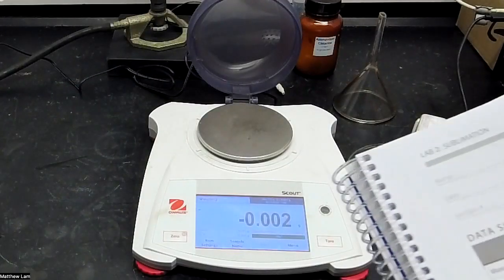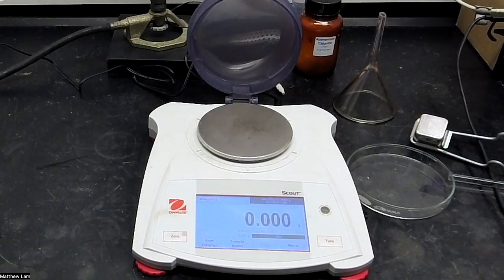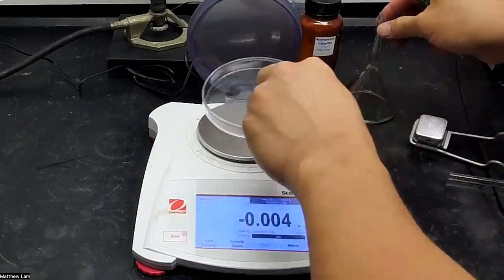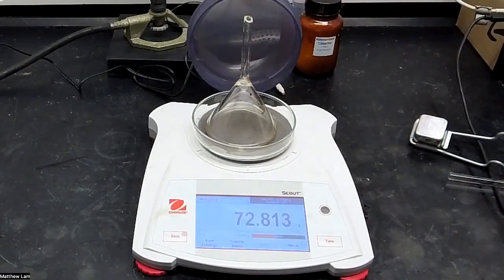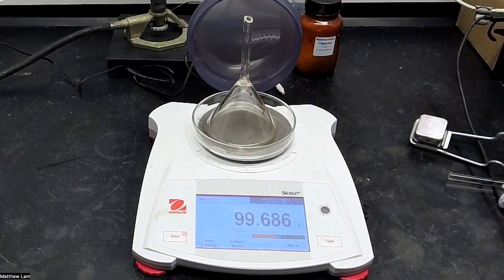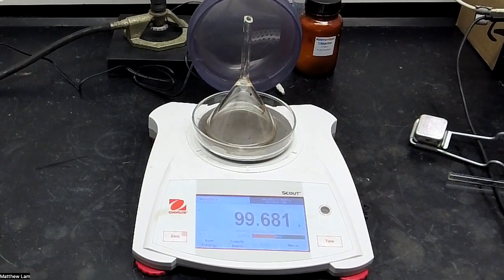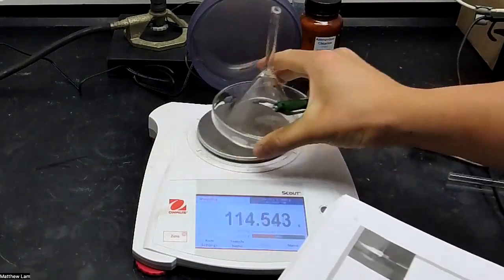Then they want us to measure the mass of the Petri dish half and a clean funnel. So we'll put that up there and our clean funnel. We'll weigh that together. That comes out to 99.681 grams.